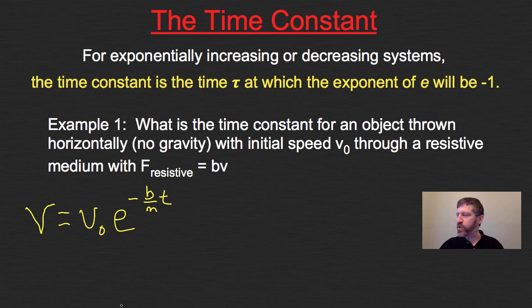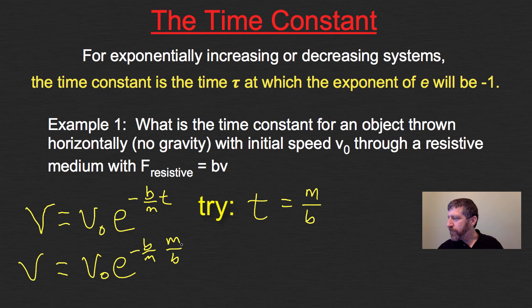I remember this using 'itty-bitty'—that mnemonic where b and t are tiny up there. So itty-bitty: negative b over m times t. What does t have to be so that this exponent equals negative one? That's easy. If we make t equal to m/b, then V equals V0 * e^(-b/m * m/b).